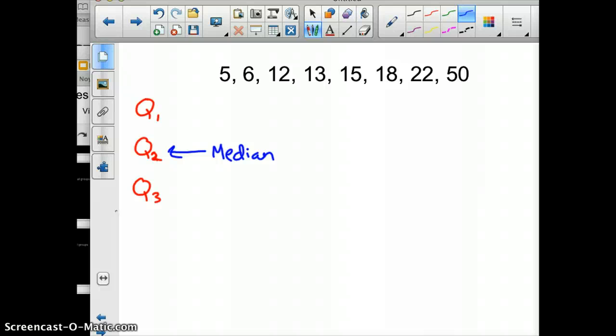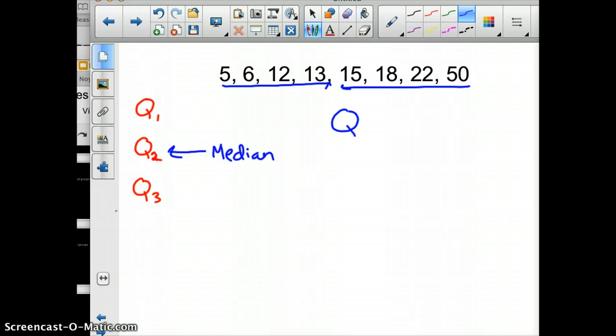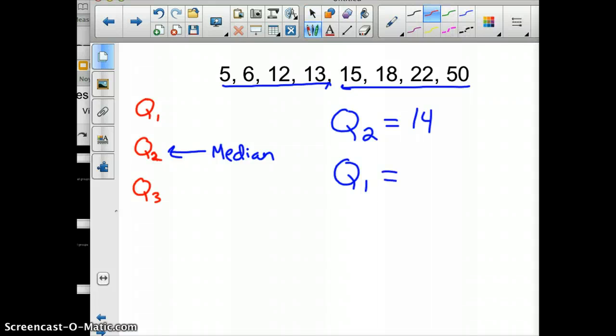There's eight pieces of data here, so you count up 4 and count back 4. The median would be, or quartile 2, would be 14, because that's right in between the two. So you add 13 plus 15 divided by 2. To find quartile 1, you divide all your data in half, like folding a piece of paper in half.